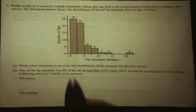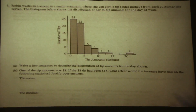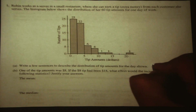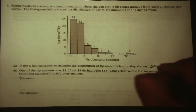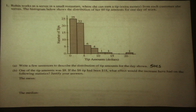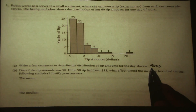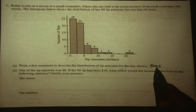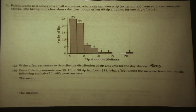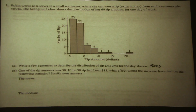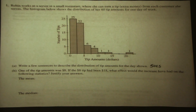When we're describing a distribution, we can use the acronym SAUCE to help us remember what we need to talk about. We need to talk about shape, outliers, center, and spread. So let's start with shape.